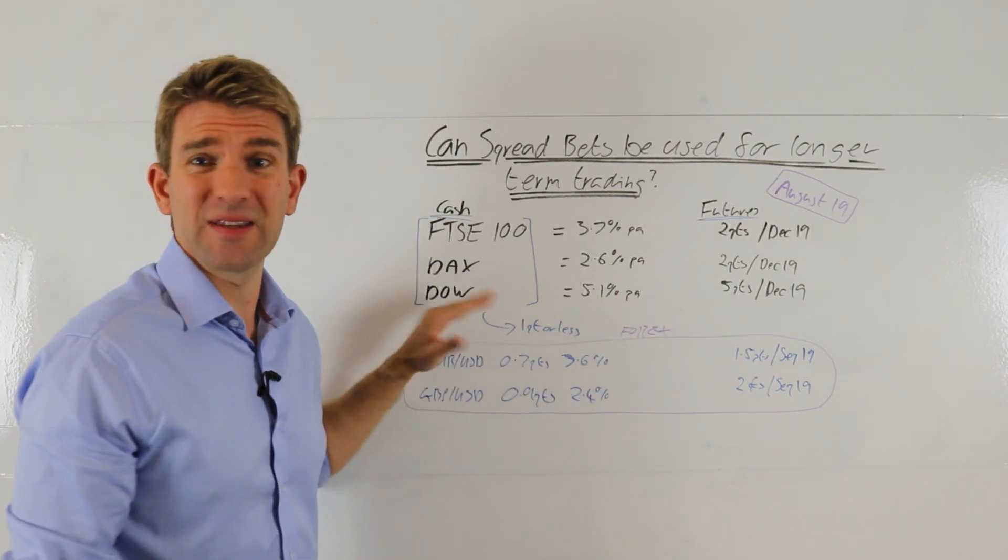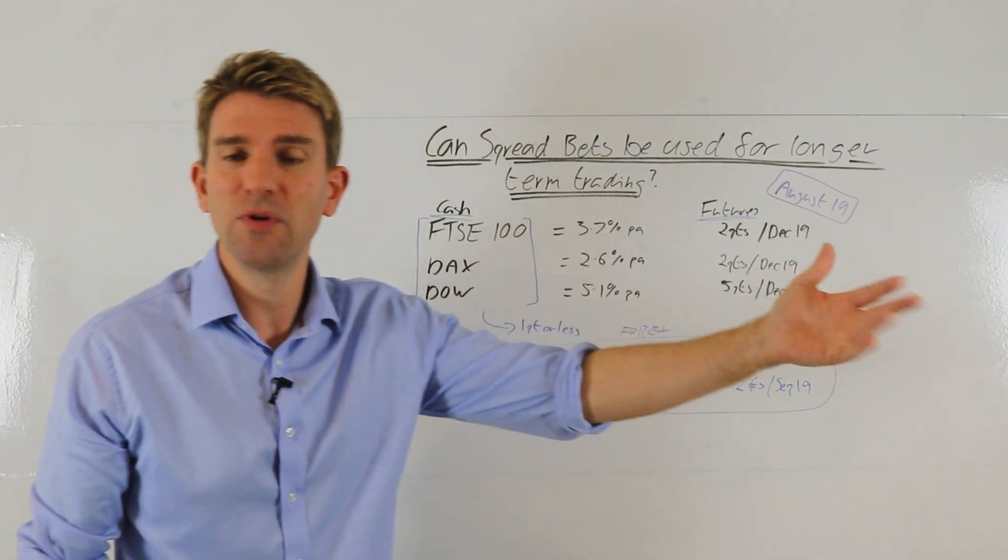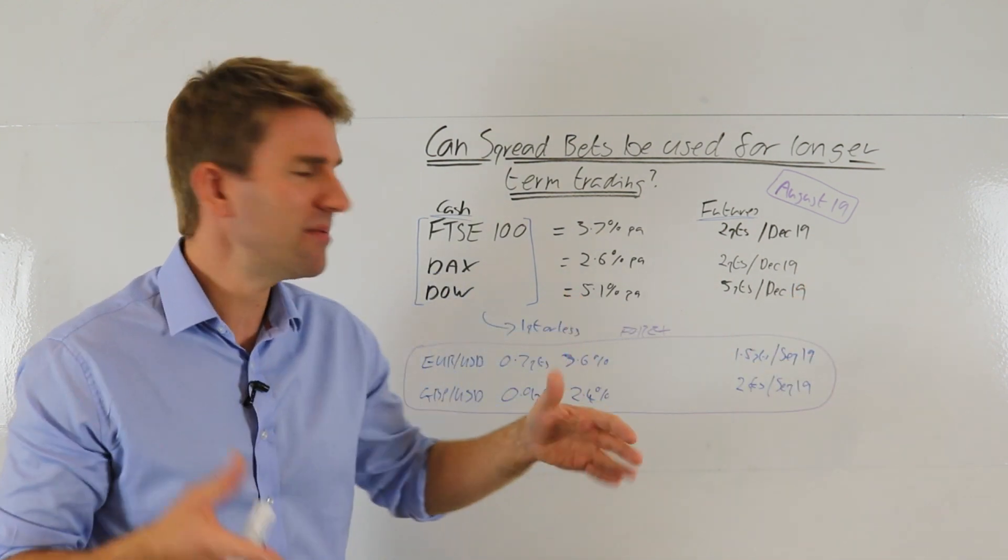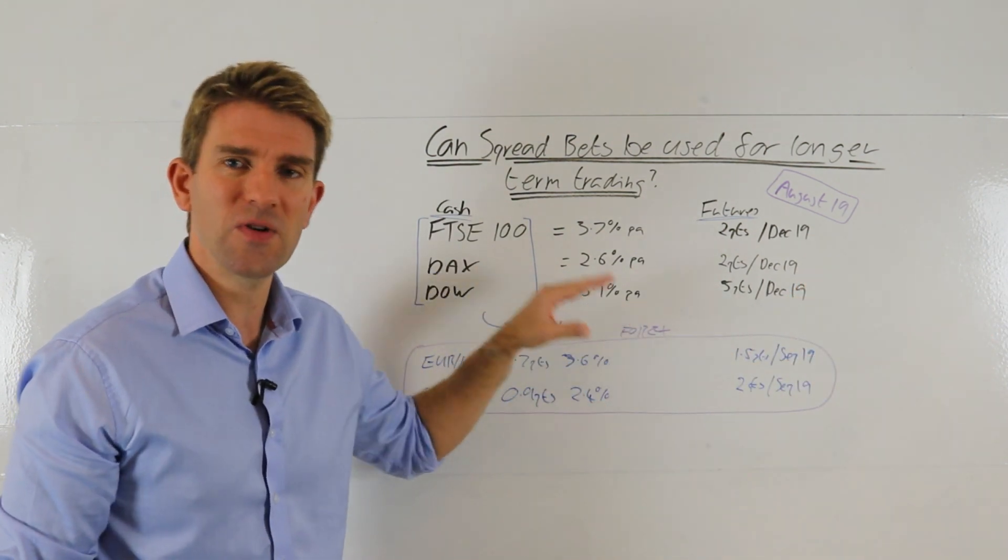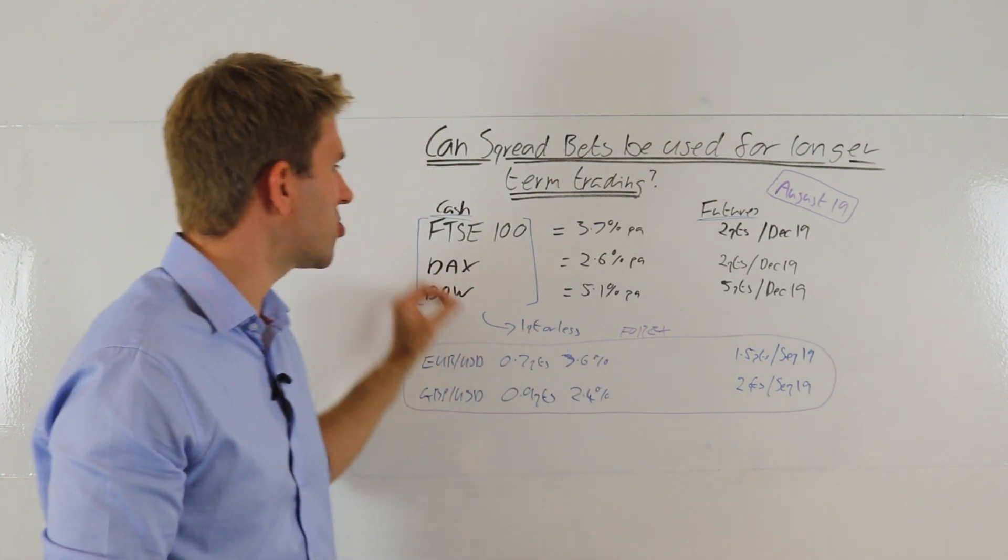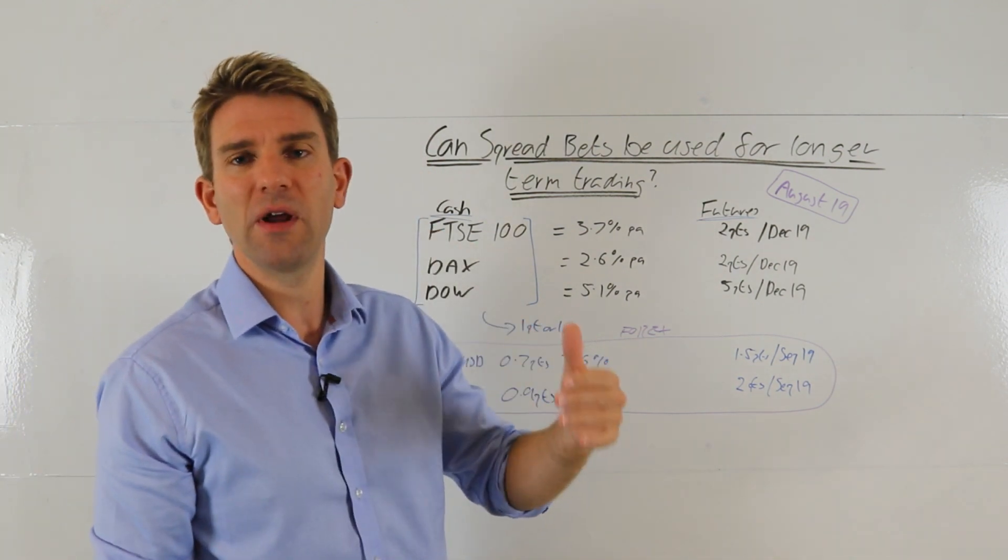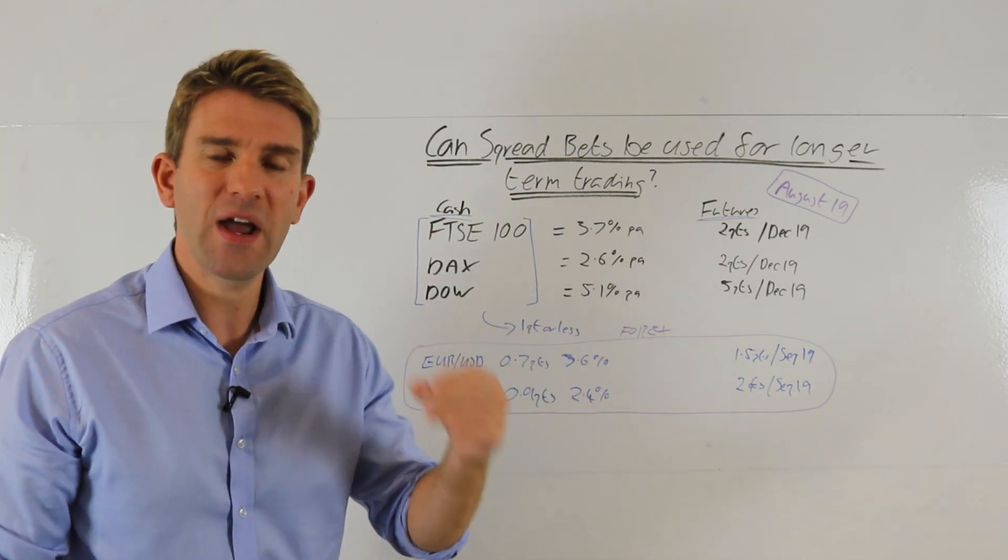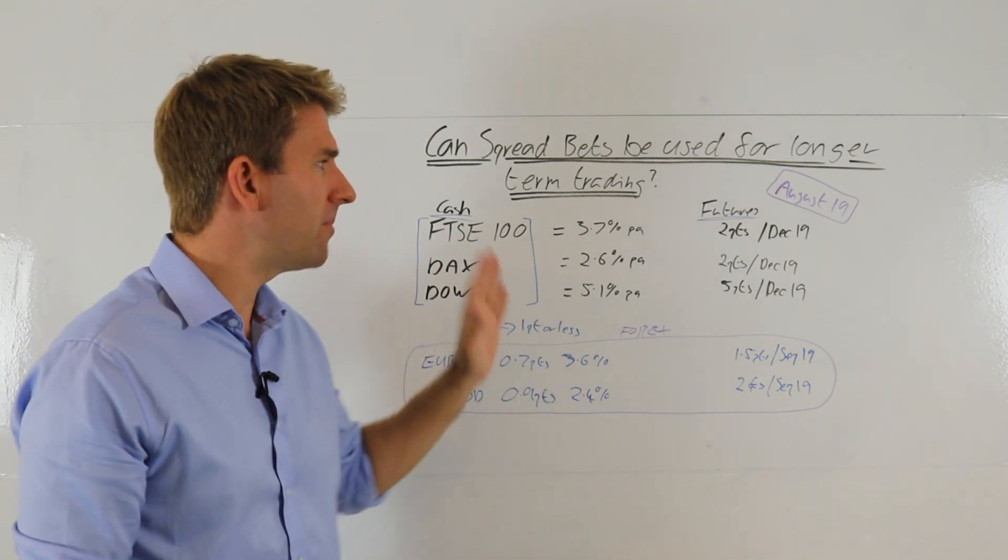When you think about, well, how much do you expect the DOW to move in a year? I mean, I'm sure it can move 10% plus, but over time, you might be restricting yourself a little bit. So the daily rolling cash, or the daily rolling bets, some of them call it, isn't going to be the most effective way and efficient way of expressing a longer-term view.